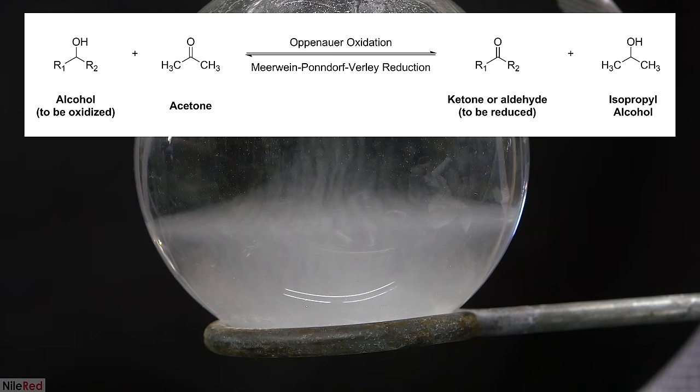Depending on the direction of the reaction, it has different names. If we're reducing a ketone to an alcohol, it's called a Meerwein-Ponndorf-Verley reduction, or MPV reduction for short. If we decide to oxidize an alcohol, it's called an Oppenauer oxidation.